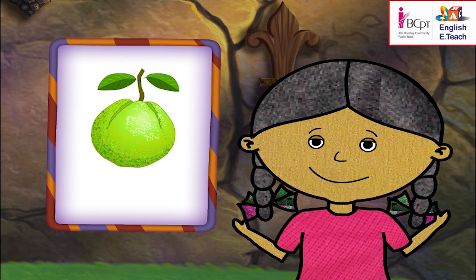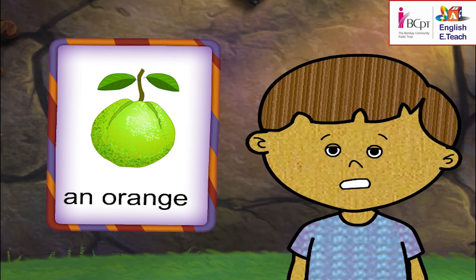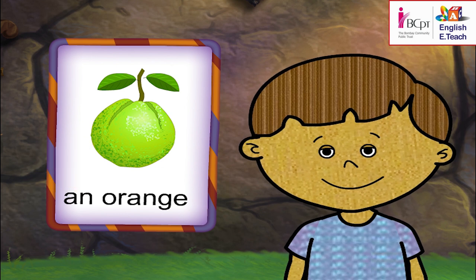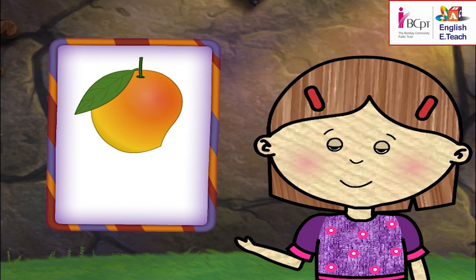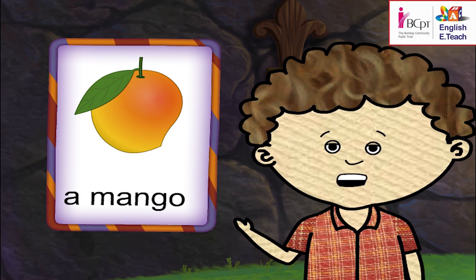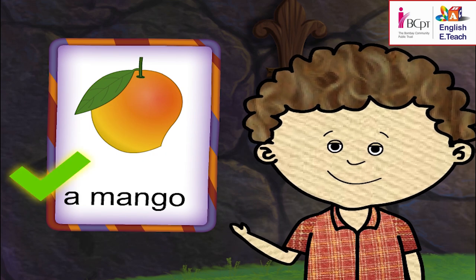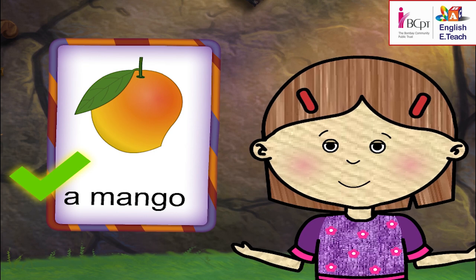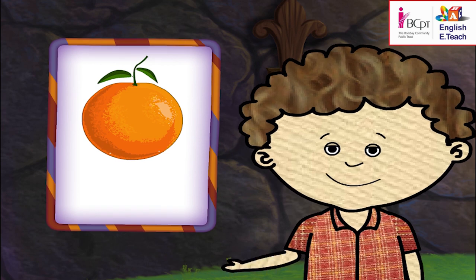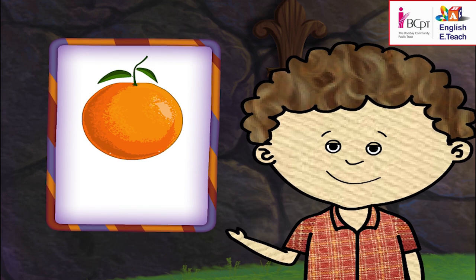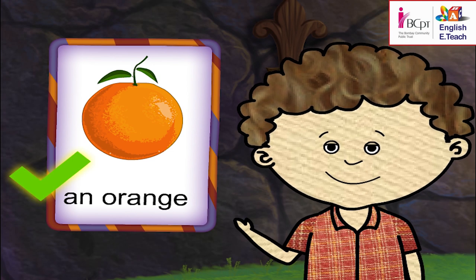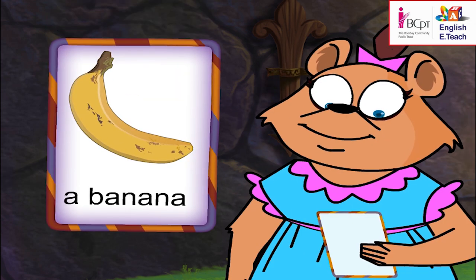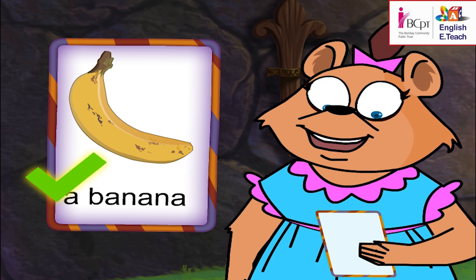My turn — guess who I am. You are an orange. No, I am a guava. Who am I? Let's see — you are a mango. Yes, I am a mango. And I am an orange. That's right. And Bubbly is a banana. Yes, I am.